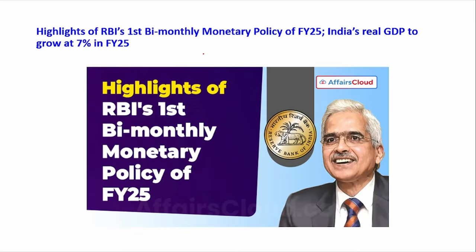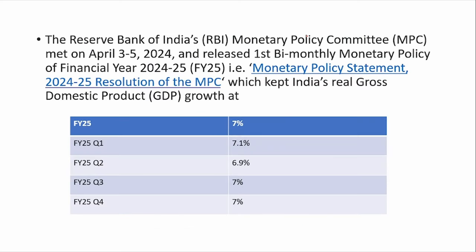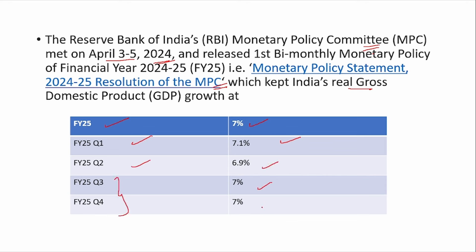The next news is highlights of RBI's first bi-monthly monetary policy of financial year 25. The new financial year has started and the first Monetary Policy Committee meeting by the RBI was conducted on April 3–5, 2024. It released the monetary policy statement 2024-25 resolution of the MPC. It has kept India's GDP growth at 7% for FY25 — Q1 at 7.1%, Q2 at 6.9%, and Q3 and Q4 at 7%.